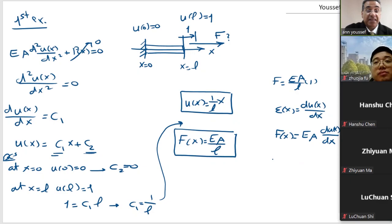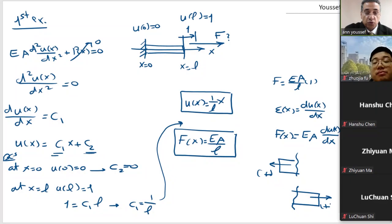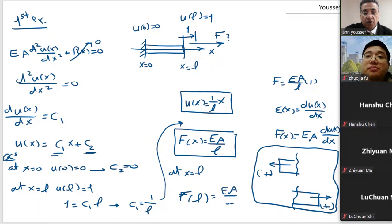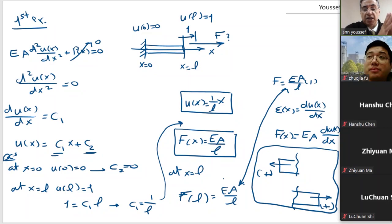The direction of the force — when we have an end like this and the force is in this direction, it is positive by definition, due to the outward normal convention. So at x equal L, the force equals EA over L, as obtained from the theory of elasticity. This is a very simple boundary value problem solved using the differential equation approach by direct integration. We don't have any domain term, we don't have P(x).